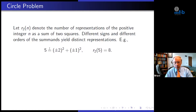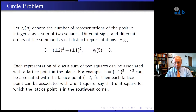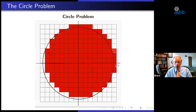So if we take 5, you can write it as ±2² ± 1², but then you can invert the order of the ones and the twos, so altogether r₂(5) = 8. You can take each representation of n as a sum of two squares and associate it with a lattice point in the plane. For example, 5 = (−2)² + 1², and we associate that with the lattice point (−2, 1). Each lattice point can then be associated with a unit square. We'll take the square associated with the lattice point such that the lattice point is in the southwest corner. So in this picture, I'm looking at all the lattice points in the circle of radius √x.